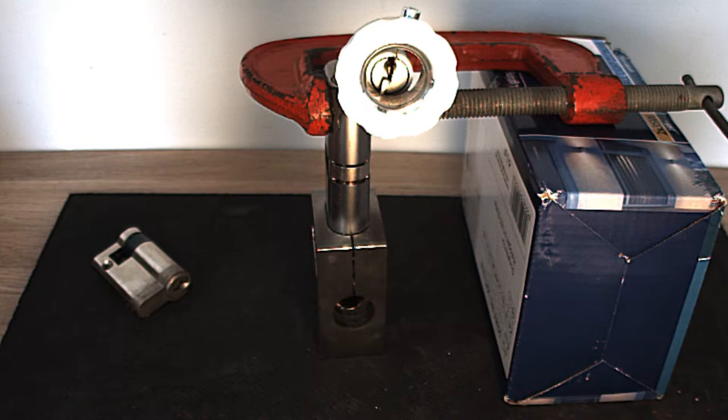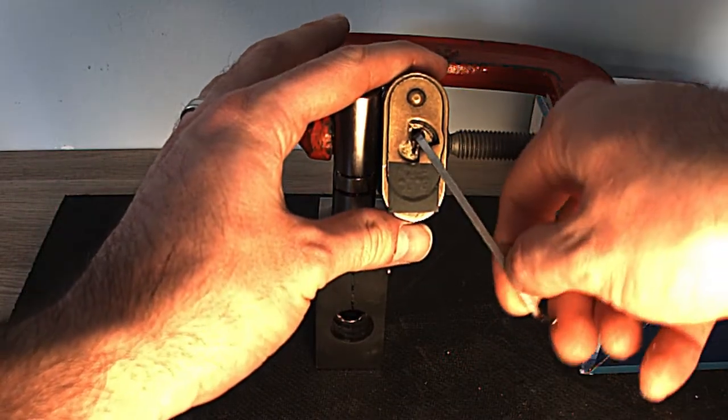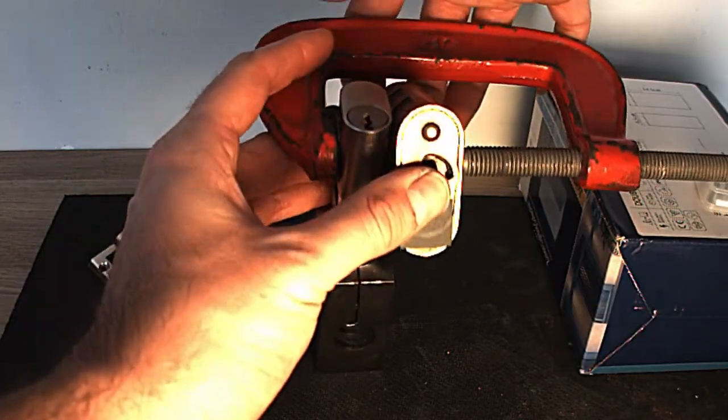So in some locks it works really really well and it's very quick. In others it can take a little while. In others it just really doesn't work and all depends on your application. So now let's see how it is on a Yale six pin padlock. As you can see it's locked.